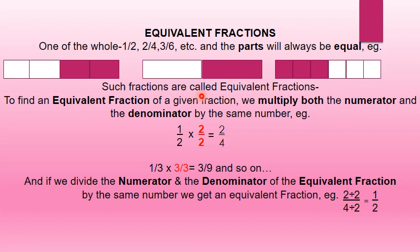To find an equivalent fraction of a given fraction, we multiply both the numerator and the denominator by the same number. For example, 1 upon 2 multiplied by 2 upon 2 equals 2 upon 4. Similarly, 1 upon 3 multiplied by 3 upon 3 equals 3 upon 9. And if we divide both numerator and denominator by the same number, we also get an equivalent fraction. For example, 2 divided by 2 upon 4 divided by 2 equals 1 upon 2.